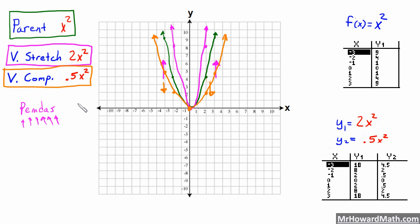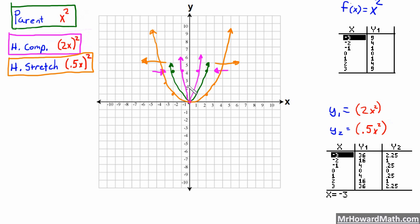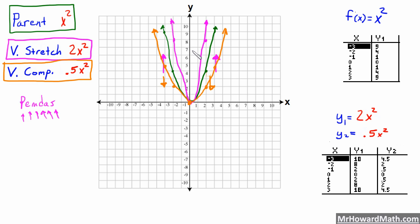Quick review: Horizontal compression — the graph increases at a faster rate, squeezed in the x direction. Horizontal stretch — the graph gets wider, stretching in both positive and negative x, increasing at a slower rate. Vertical stretch — the graph is stretched upward, becomes more narrow, data increases at a faster rate. Vertical compression — the graph is pushed down, becomes wider, and y values increase at a slower rate. That's vertical and horizontal stretch and compression.